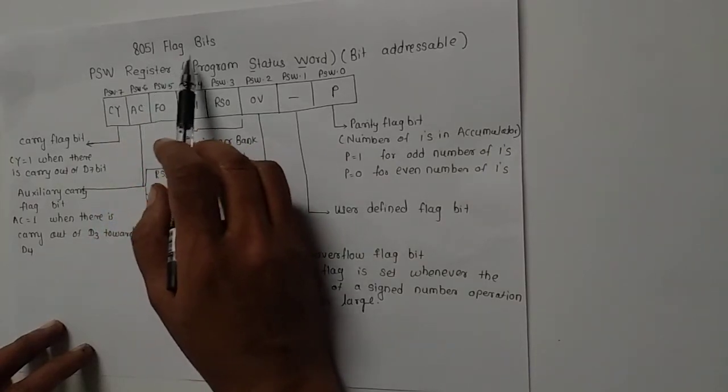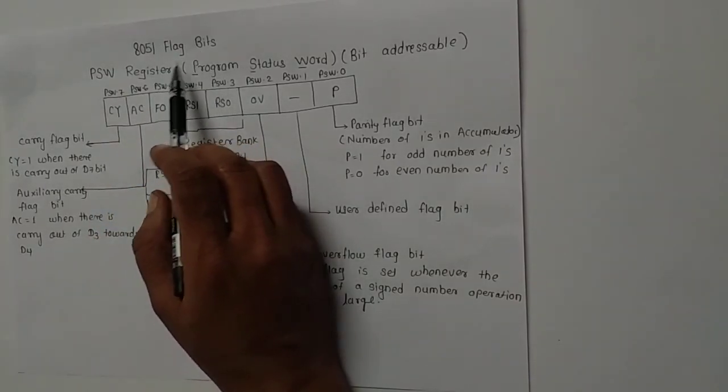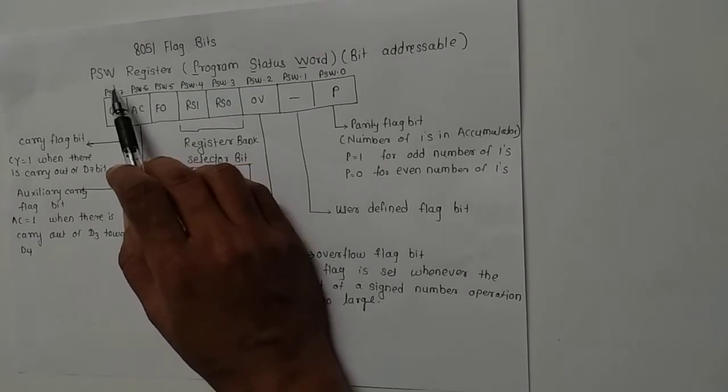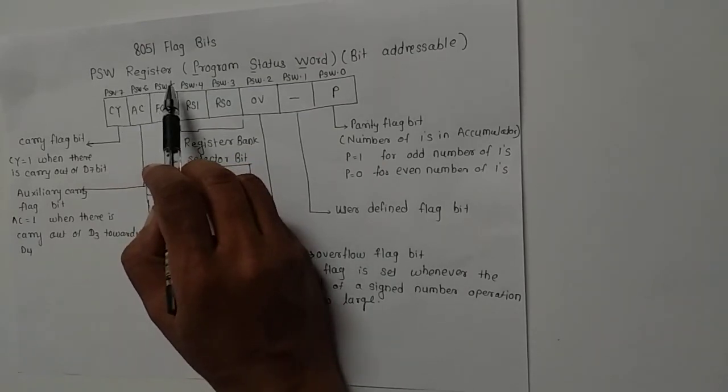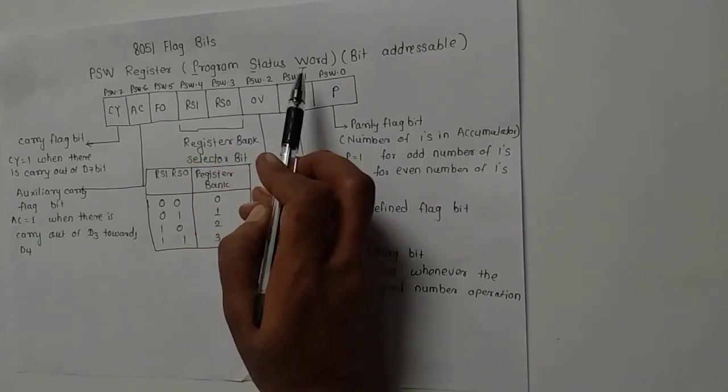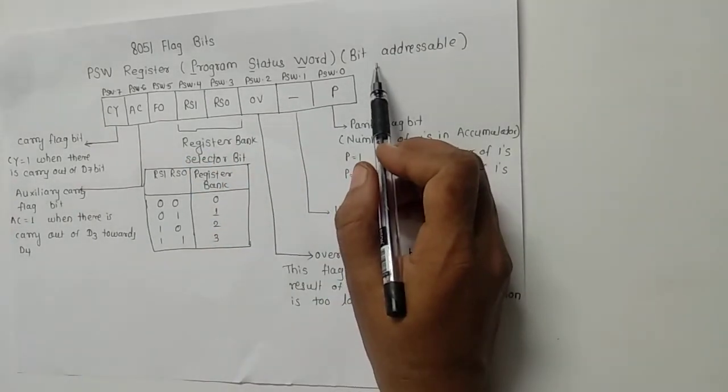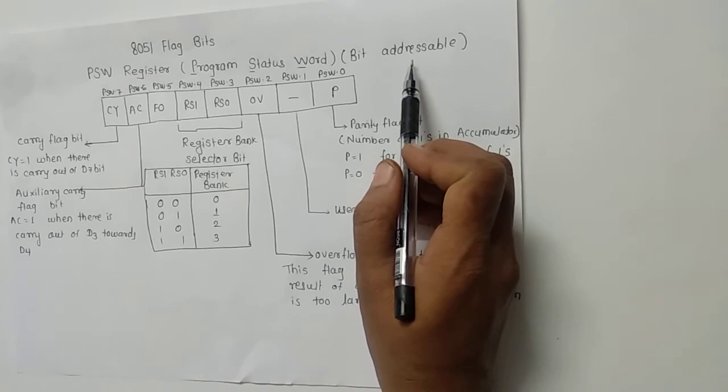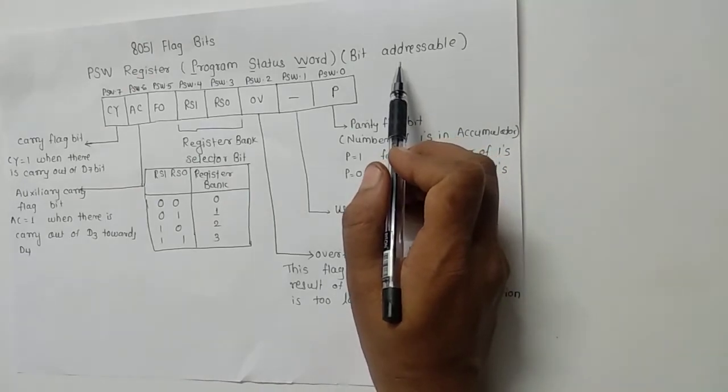8051 flag bits: PSW register, which is also called the Program Status Word, which is bit addressable. This PSW register is an 8-bit register.